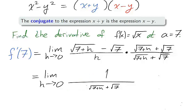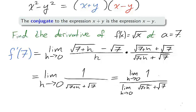Now notice that the limit of the denominator is non-zero. This means that we are in a position to use our limit laws. We use the quotient rule moving the limit into the numerator and the denominator, and using direct substitution with h equals 0 in the denominator, we find that the derivative of the square root of x at 7 is 1 over 2 times the square root of 7.